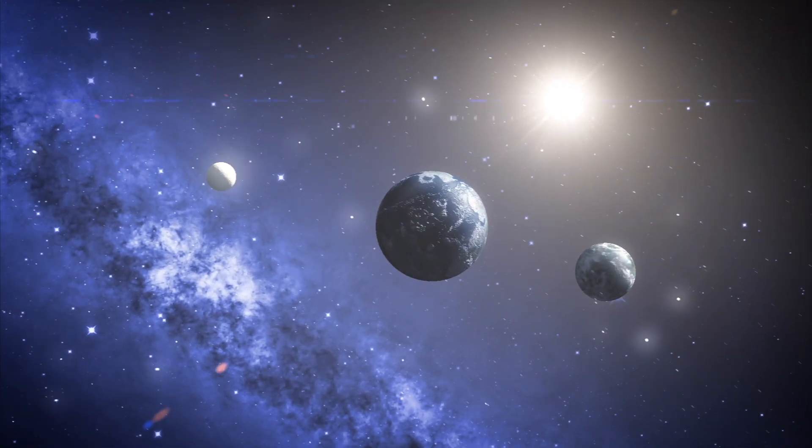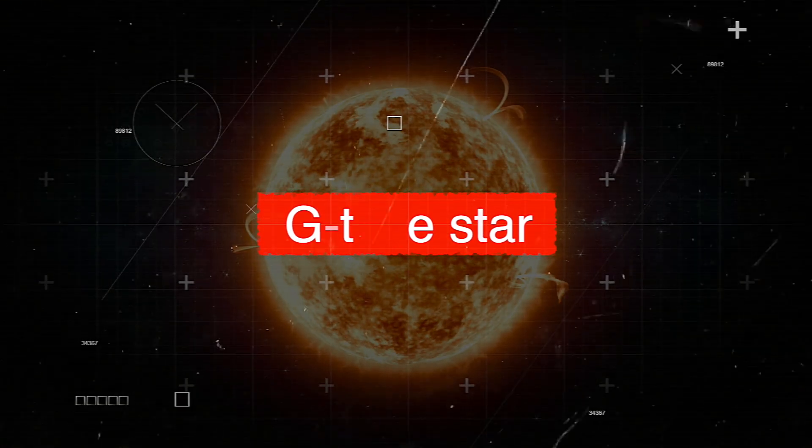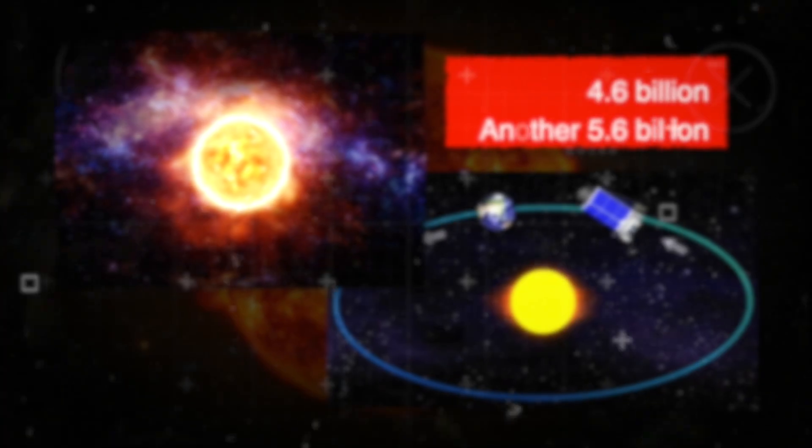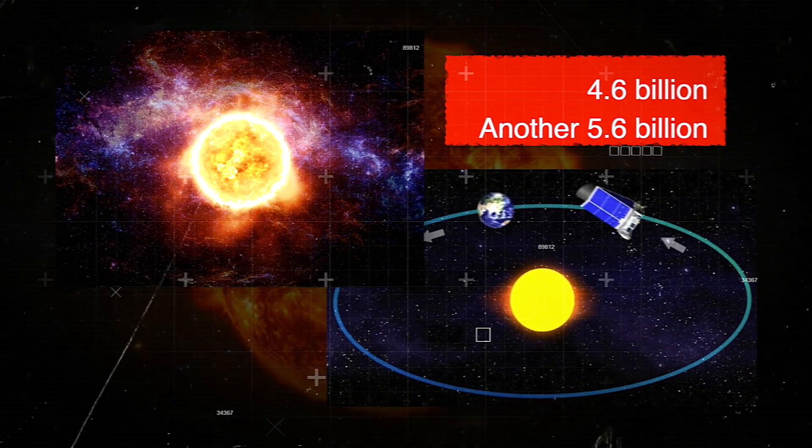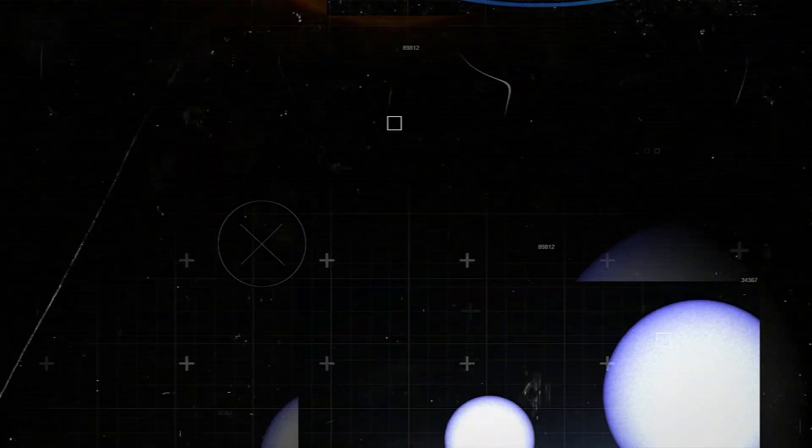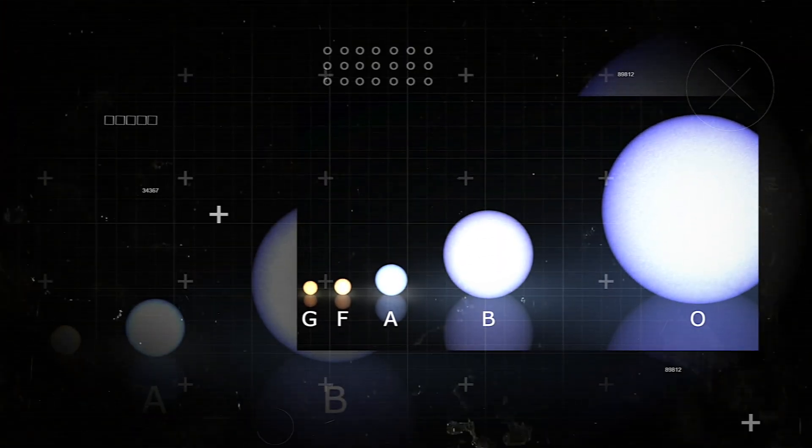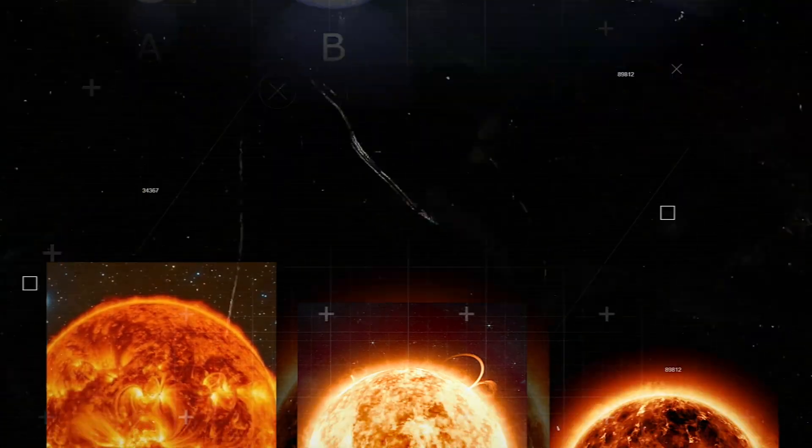After choosing Earth as their starting point, they began looking for a specific type of star. Our sun is classified as a G-type star. That means it's been around for 4.6 billion years, and will continue to do so for another 5.6 billion. That may appear to be a very long time. However, in the larger scheme of things, several other styles stay much longer.